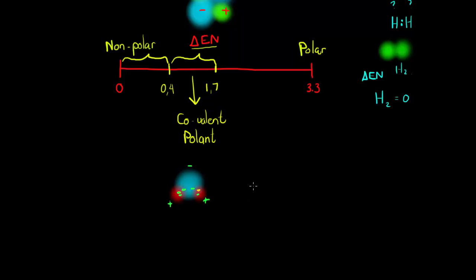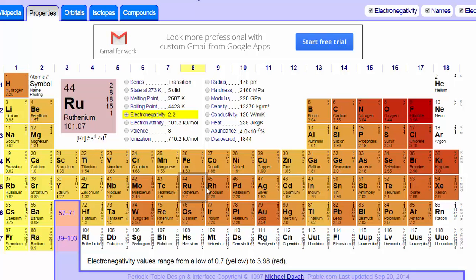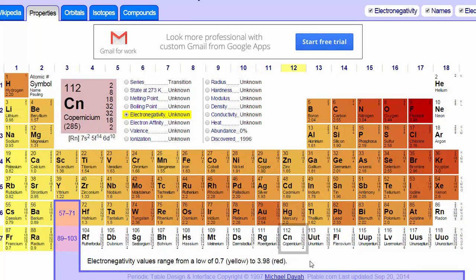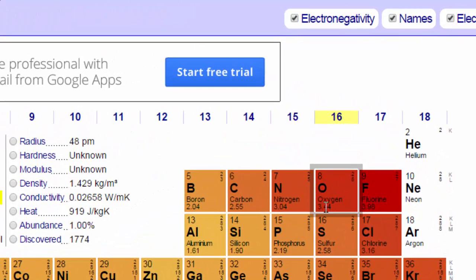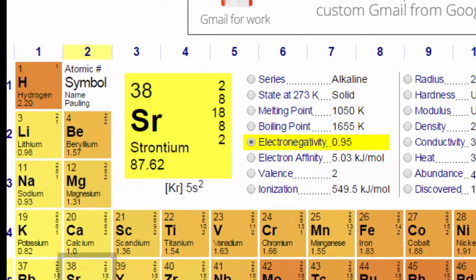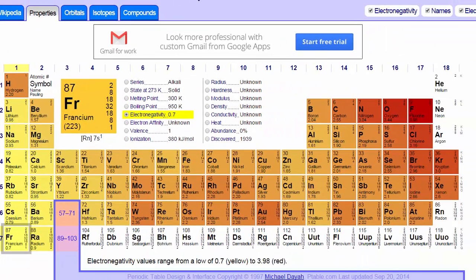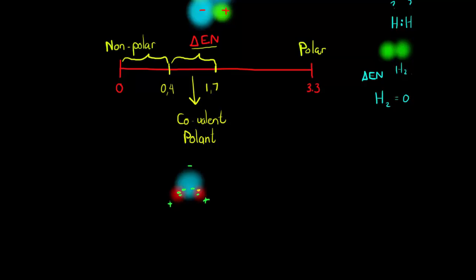Now, how could we have looked at it? Well, if I go to my periodic table, I see oxygen is 3.44, the electron negativity, hydrogen is 2.2, so if I calculate the electron negativity here, I get 3.44 minus 2.2, and what does that give me? That gives me 1.24.